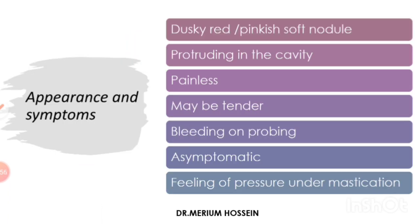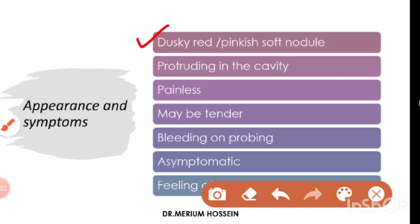This condition appears as a dusky red or pinkish soft nodule protruding into the dentinal cavity. It is usually painless and asymptomatic, but there can be a slight feeling of pressure when the patient chews or bites. It may be tender and bleeds very easily because there is a lot of inflammation going on in the pulp tissue.